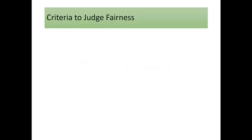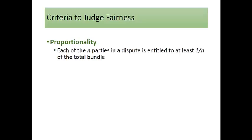We're going to start with a little bit of criteria that can be used to judge fairness. The first criteria is called proportionality, and it says that each of the n parties in the dispute is entitled to at least one-nth of the total bundle.